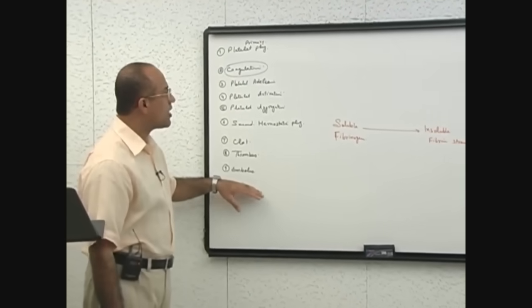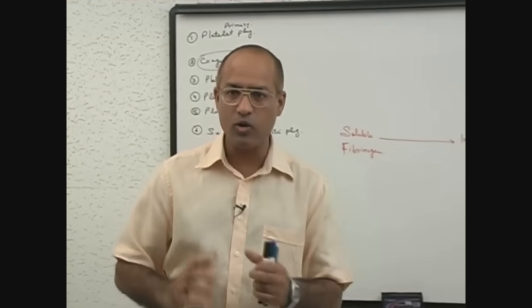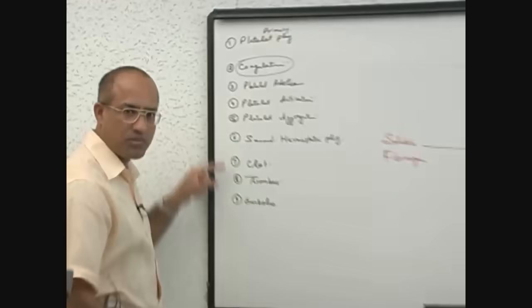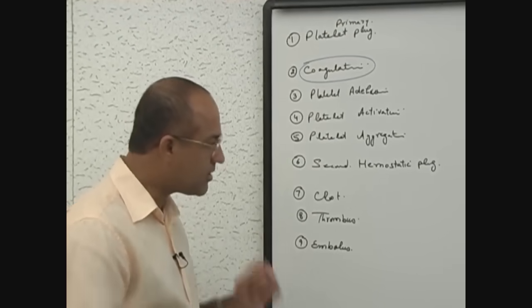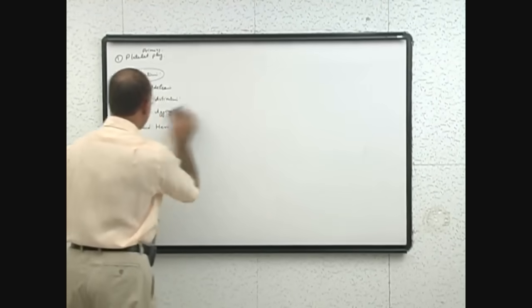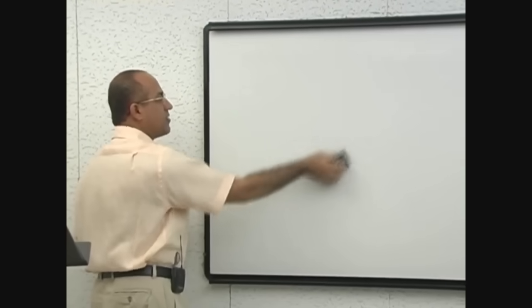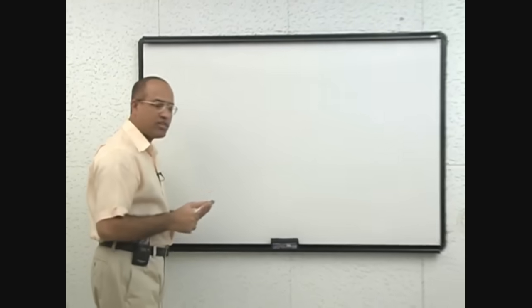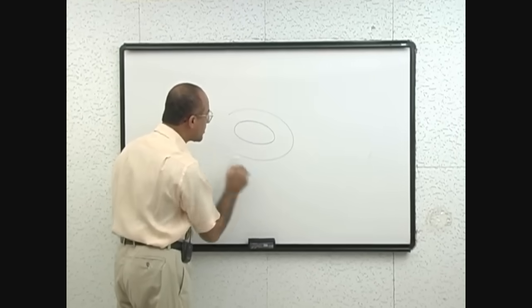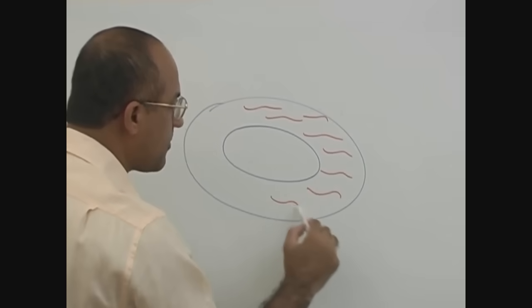I will start the lecture with a special story: if someone's vascular system is injured, how do the platelets and coagulation system work? During the lecture, I will explain all these terms at different stages. All of you know something very important — that blood is normally present in your circulatory system in liquid form.